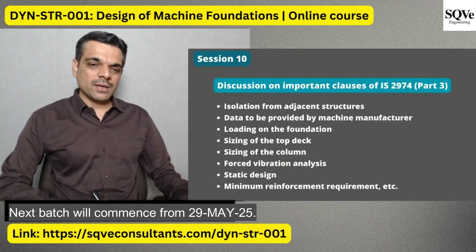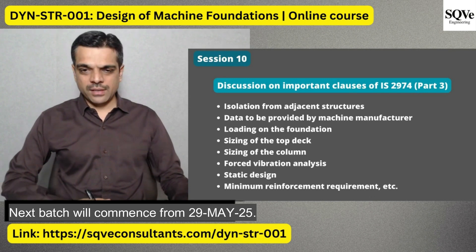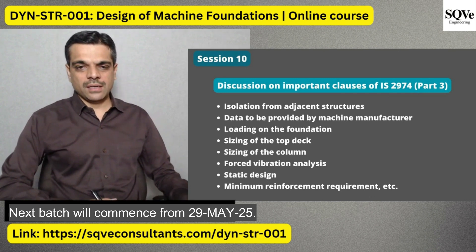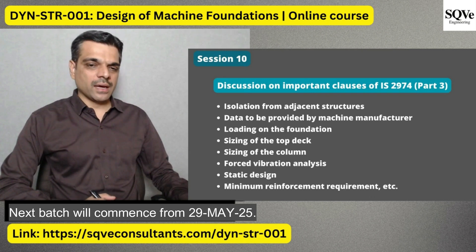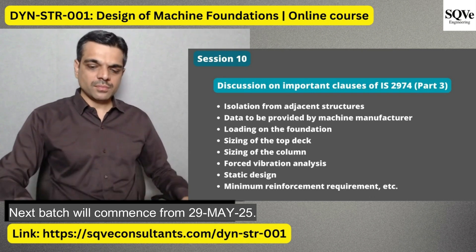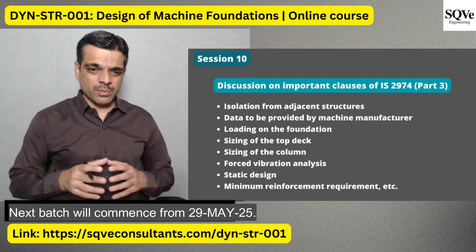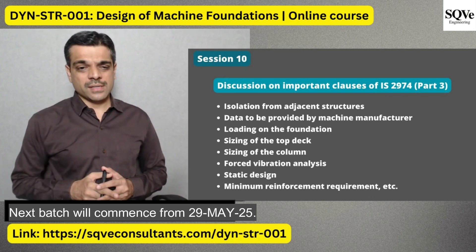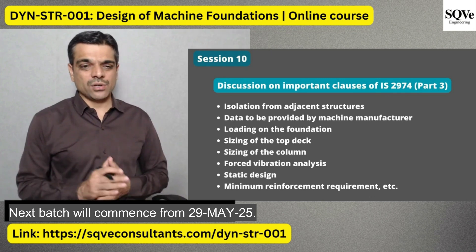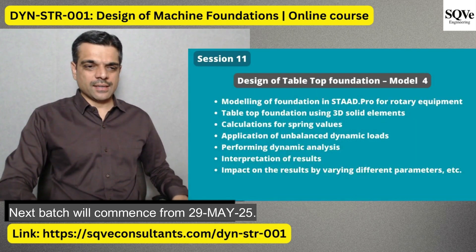In the next session we'll talk about important clauses of IS 2974 Part 3, which is specifically for rotary equipment having medium or high-speed rotating machines. We'll cover data to be provided by the machine manufacturer, sizing of the top deck, sizing of the column, forced vibration analysis, static design, and related topics.